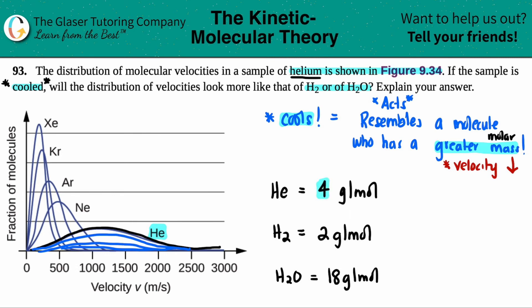So the idea here is that since helium is starting off at 4 and it's going to cool, it's going to act like a molecule who has a greater mass. So it's just got to be greater than 4. H2 is less than 4, H2O is greater than 4. So this is the greater mass.